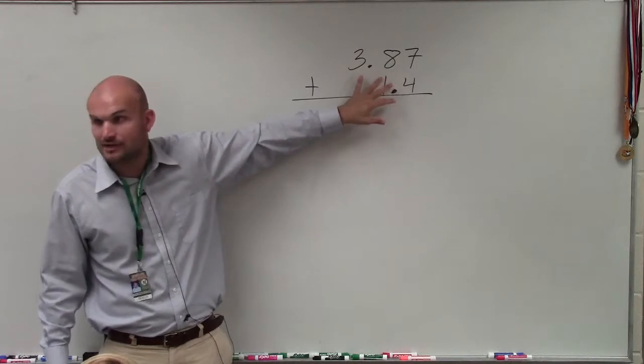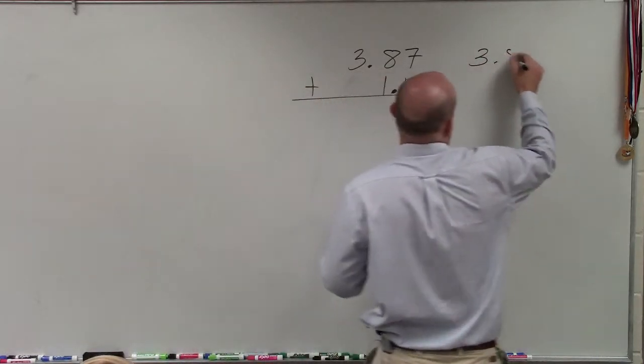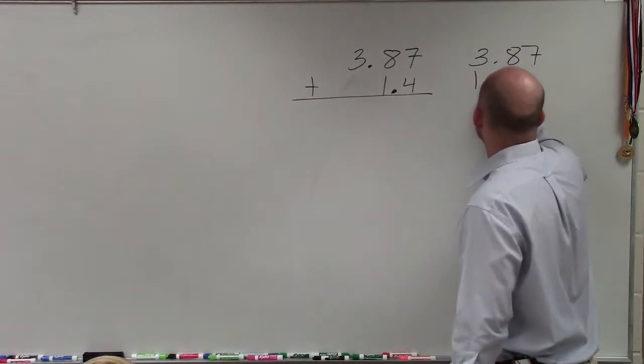All right, here the decimal points are not aligned, correct? So we want to make sure we align them. So I'd write 3.87 and then 1.4.